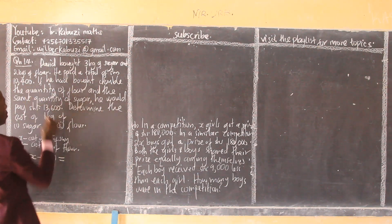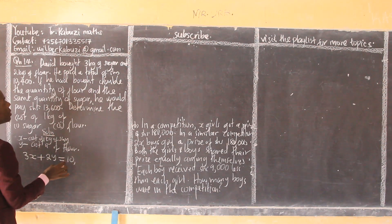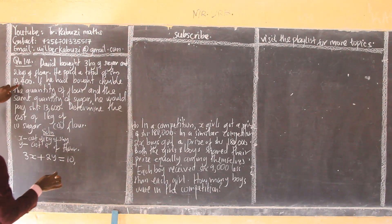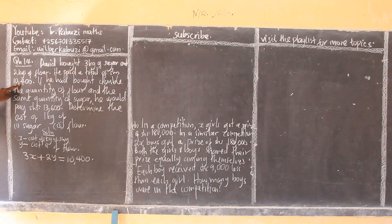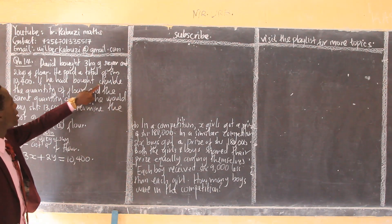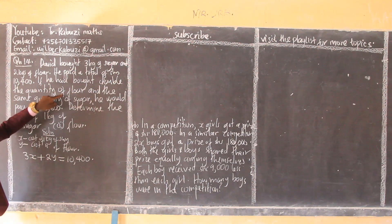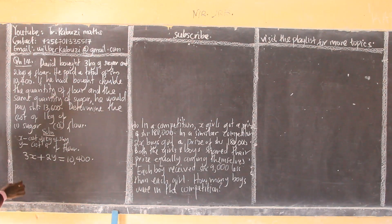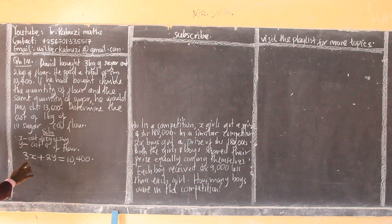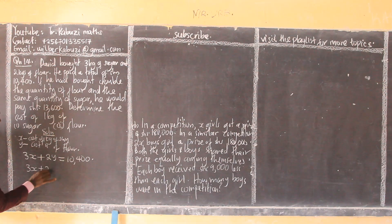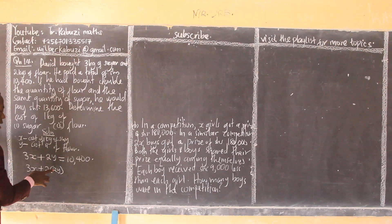He paid a total of ten thousand four hundred, so that's the first equation: 3x + 2y = 10,400. Then we move to the second case — if he had bought double the quantity of flour and the same quantity of sugar, we still have three x plus...